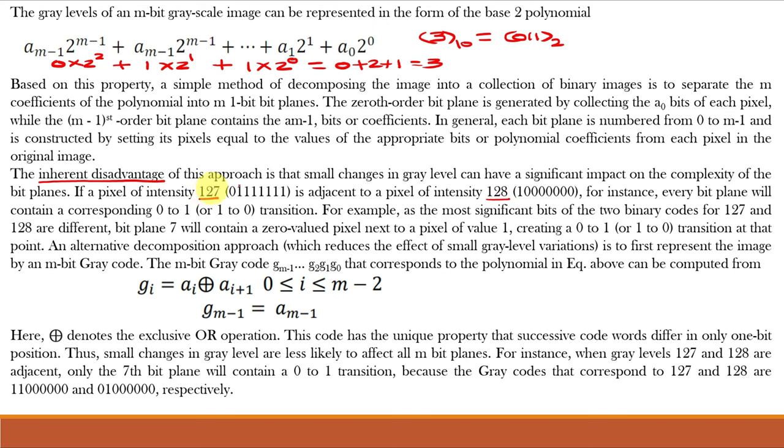So each bit plane will be having 0s and 1s and there will not be a continuous pattern. But actually in the image, these two values are near to each other or adjacent to each other. So how to solve this problem or disadvantage?